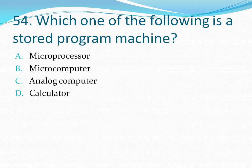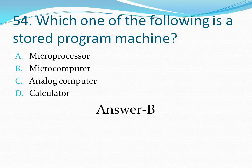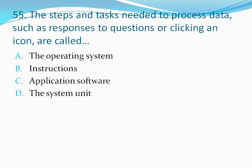Question number 54: Which one of the following is a stored program machine? Your options are: option A microprocessor, option B microcomputer, option C analog computer, option D calculator. The correct answer is option B — microcomputer.